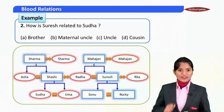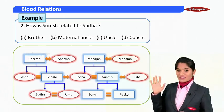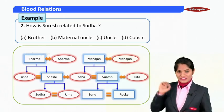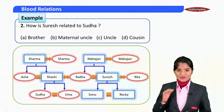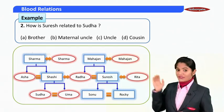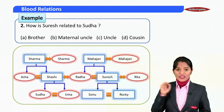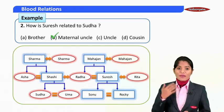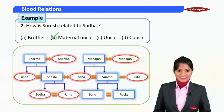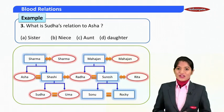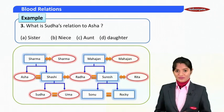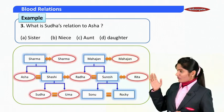Next question: how is Suresh related to Sudha? We have to find the relation between them. Sudha is the daughter of Shashi, who married Radha, and Radha is the sister of Suresh. By this relation, Suresh is the maternal uncle of Sudha.